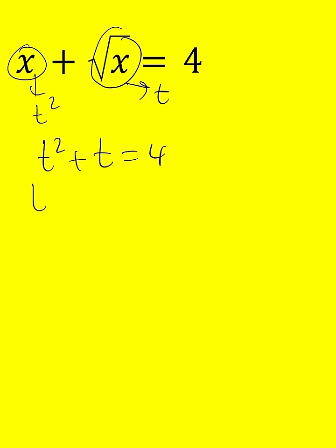You just use the quadratic formula, right? But let's go ahead and put it into a full quadratic form first. t squared plus t minus 4 is equal to 0.